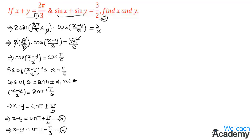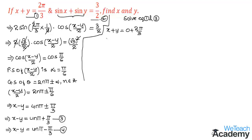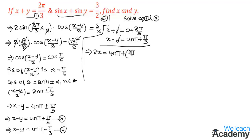Now let us solve equations 1 and 3 to get the values of x and y. Equation 1 gives x plus y equal to 2π/3, and equation 3 is x minus y equal to 4nπ plus π/3. Adding them, plus y and minus y cancel, and we get 2x equal to 4nπ plus 2π/3 plus π/3, which simplifies to 4nπ plus π.